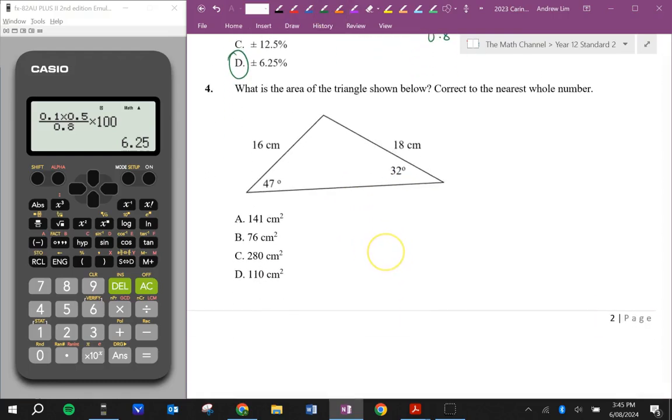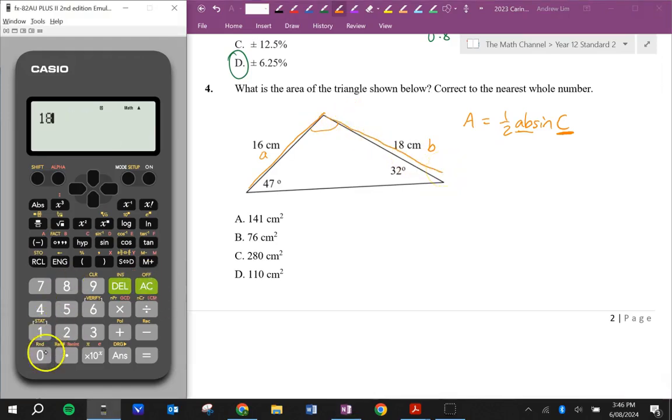Question 4. What is the area of the triangle shown below? So the area of the triangle is 0.5ab sinc, where c is the angle between a and b. Well here's my a and here's my b, so the angle between them is that angle there. So I need to work out what that angle is. So there's 180 degrees in the triangle, minus 47 and 32 to work out the missing angle 101.